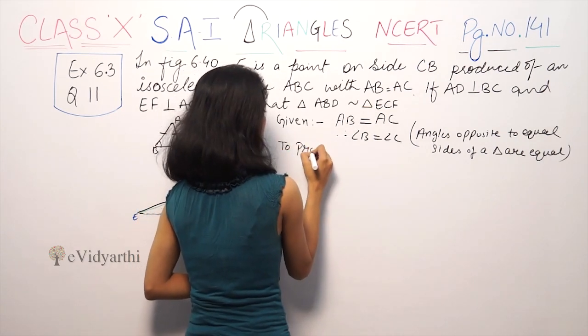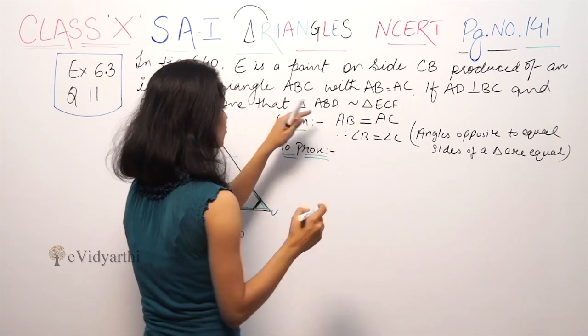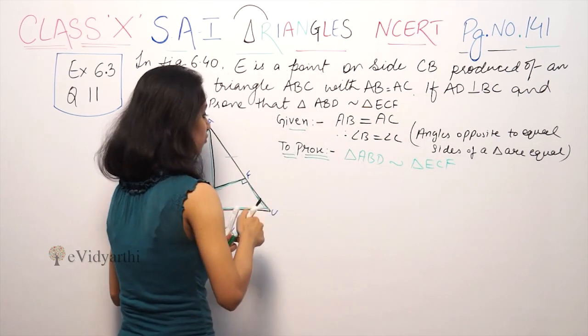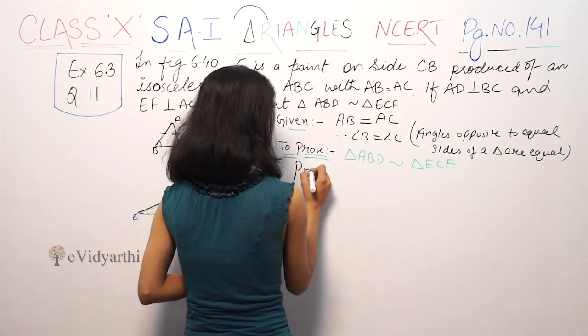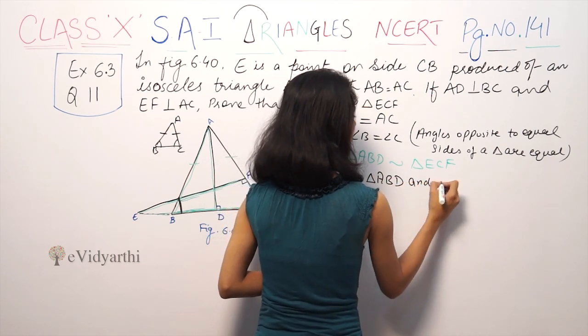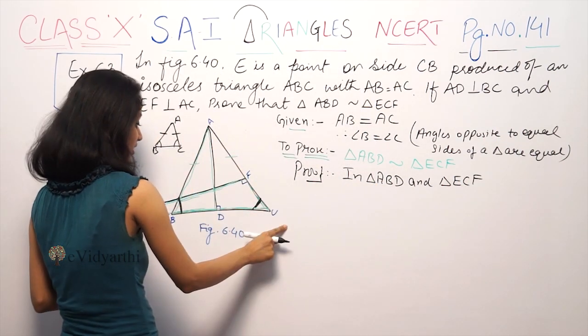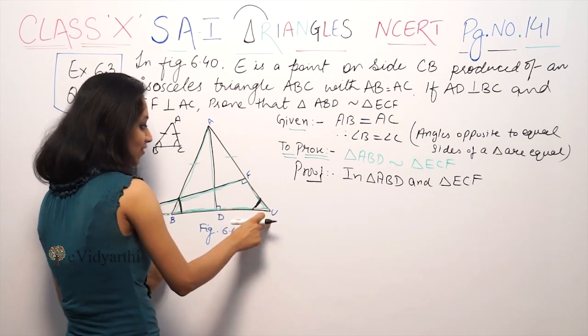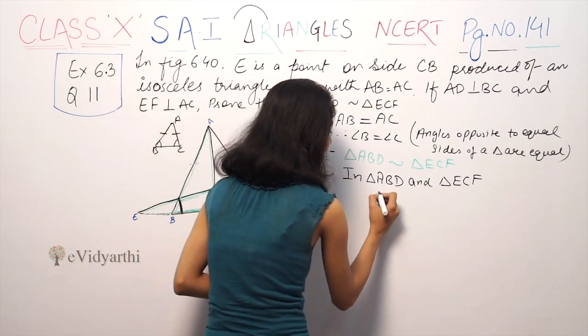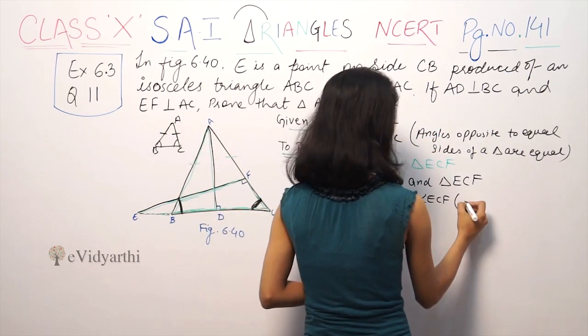Now to prove that triangle ABD is similar to triangle ECF. Proof: We have triangle ABD and triangle ECF. The most important thing is angle ABD which is angle B equals angle ECF which is angle C. So angle ABD equals angle ECF. Given.